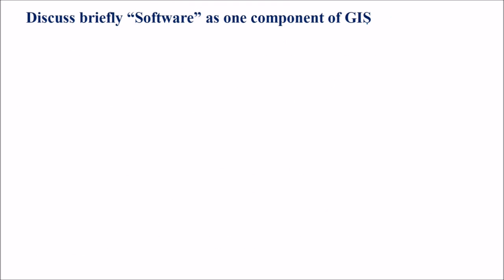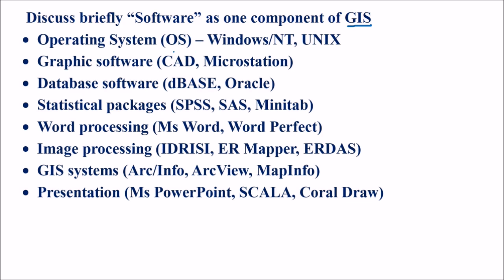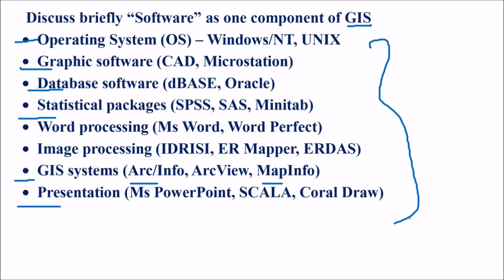Discuss briefly software as one component of GIS. GIS consists of a geographical information system — the system is a combination of all, and the software is what automates all this. For this you need an operating system, graphic software, database software, statistical packages, word processing, image processing, and GIS systems like those discussed, plus some presentation tools. All these are very much related to GIS.